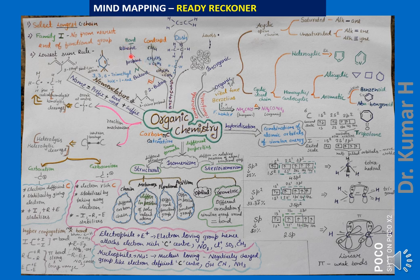Here we have structures — bond-line structure and condensed structure, which is very important. The condensed structure for methane is CH₄; CH₃CH₃ is ethane, also written as C₂H₆; CH₃CH₂CH₃ is propane, also written as C₃H₈. The complete structure shows all bonds between elements, with a dash representing each bond — so it is also called the dash structure or complete structure.